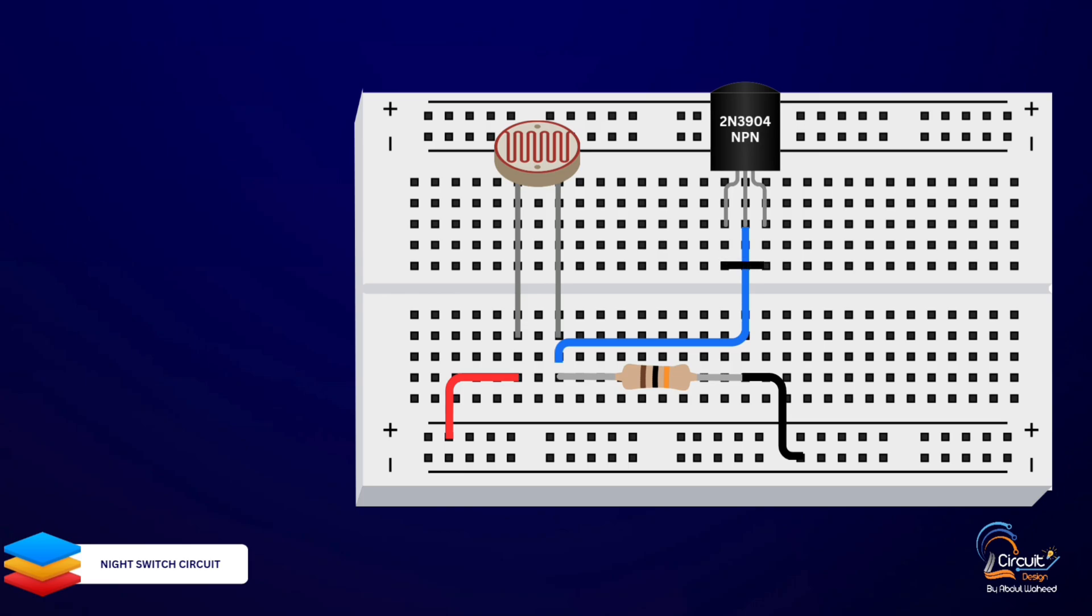Connecting the emitter and collector. Connect the emitter of the transistor to the negative rail. Now, we'll add a 1 kOhm resistor to the collector of the transistor.